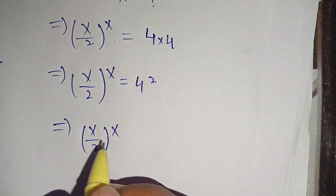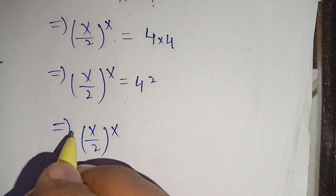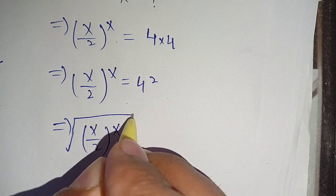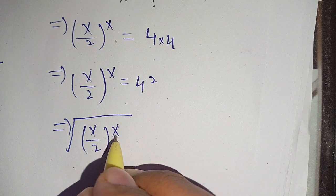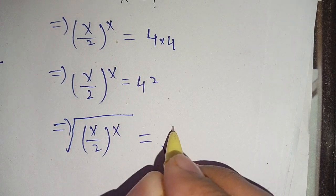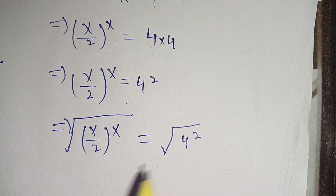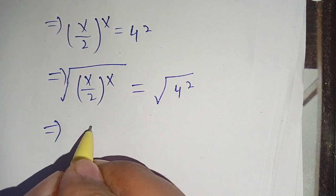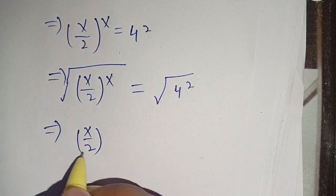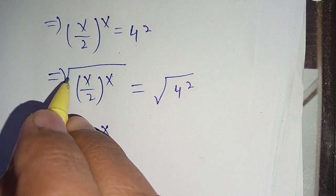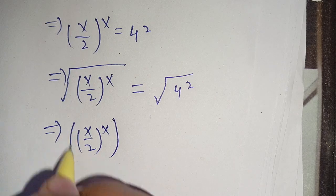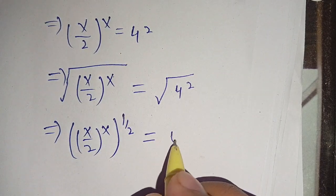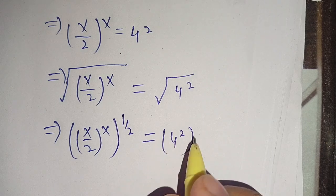Now taking the square root on both sides, we can write: √[(x/2)^x] = √(4²). We can write the square root as a power of 1/2, so the left side becomes (x/2)^x with power 1/2, and the right side becomes 4² with power 1/2.